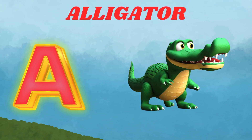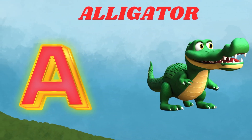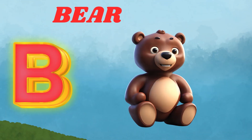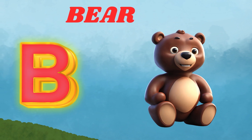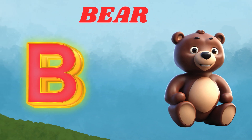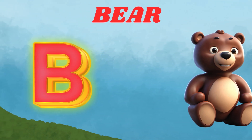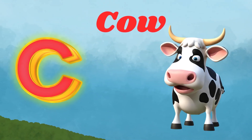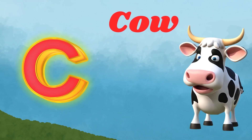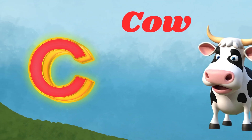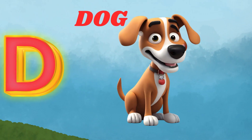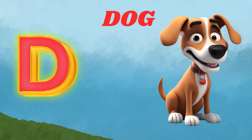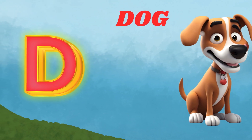A is for Alligator. A, A, Alligator. B is for Bear. B, B, Bear. C is for Cow. C, C, Cow. D is for Dog. D, D, Dog.